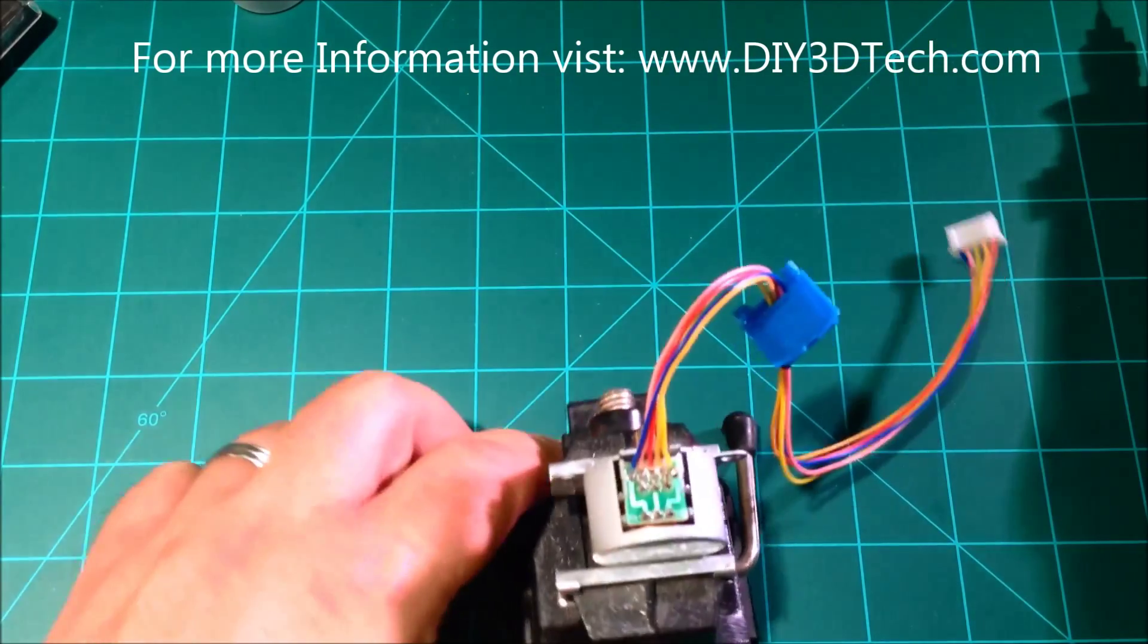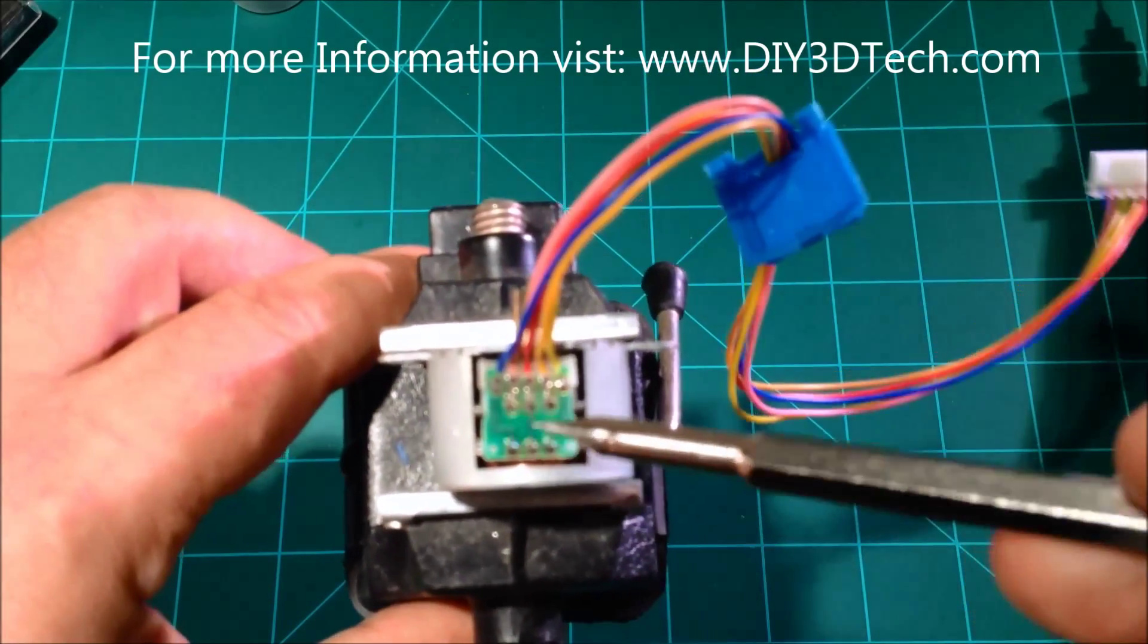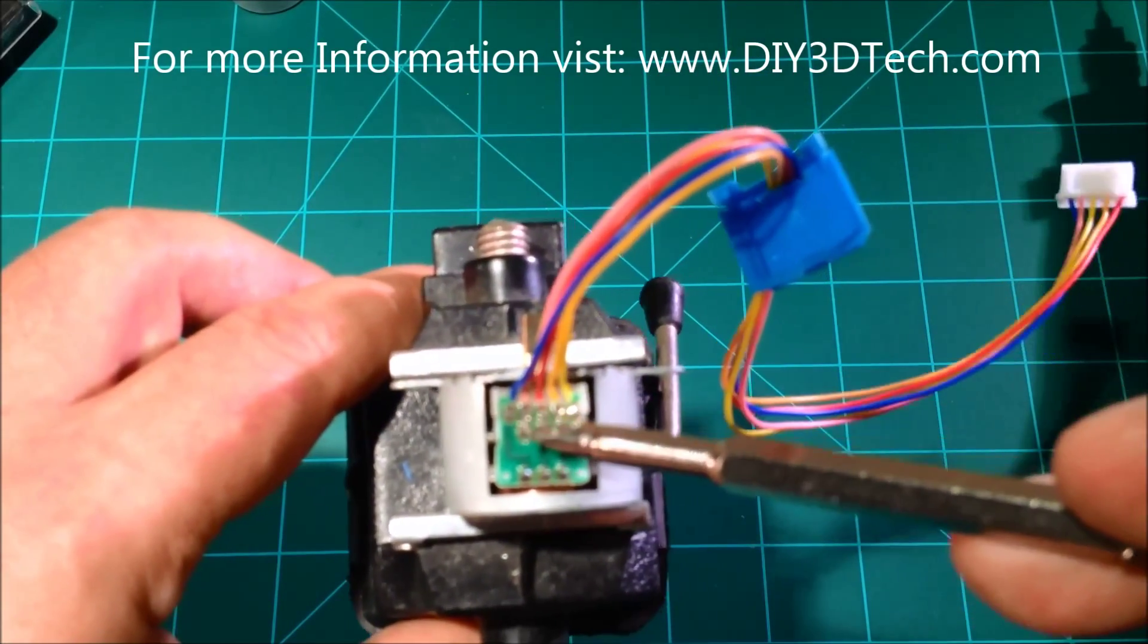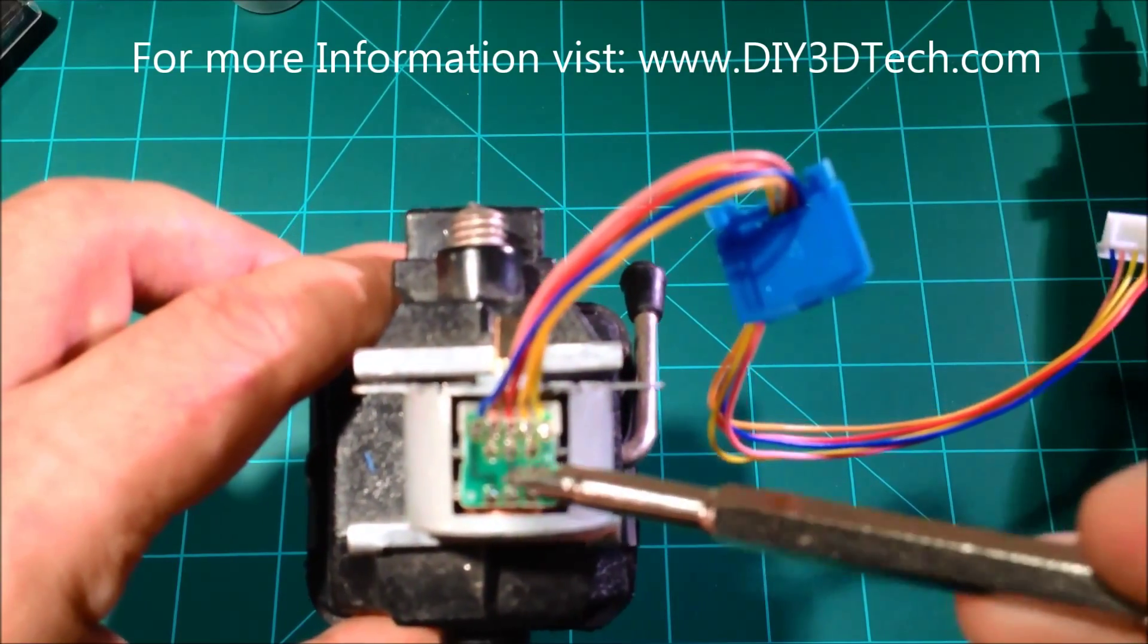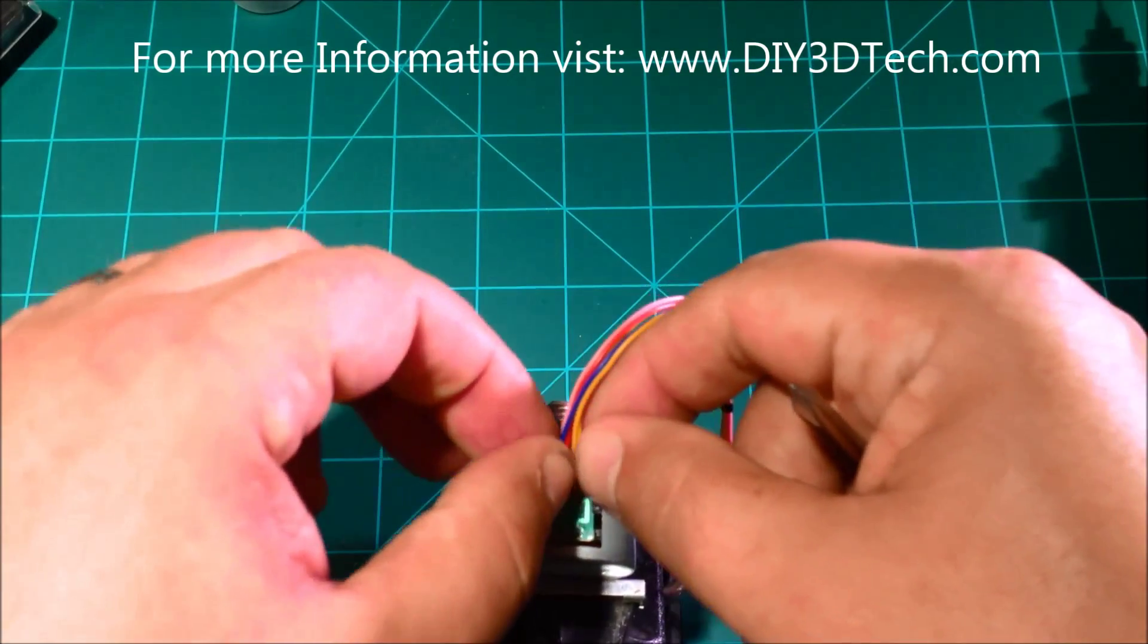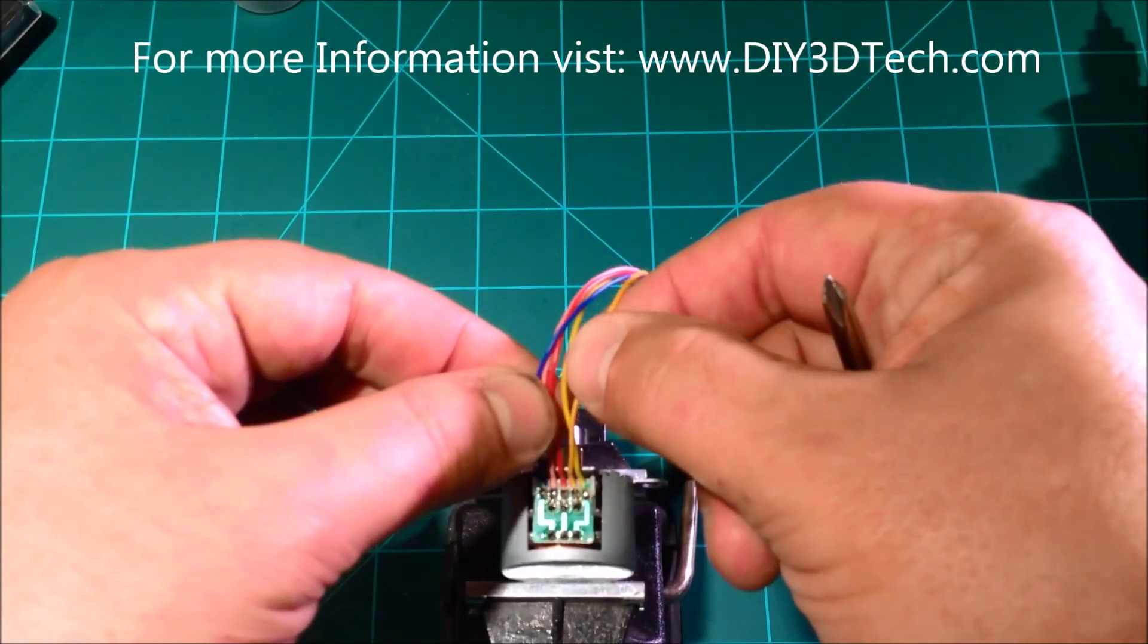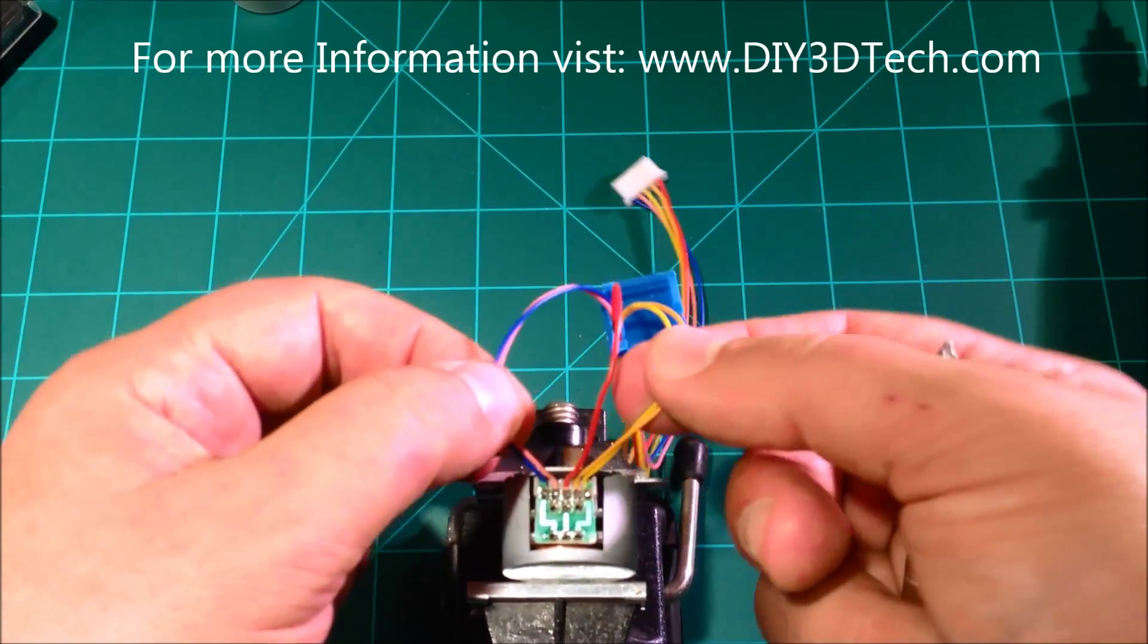Now there's a couple different ways that we can make this modification, because the modification is going to be to the center trace here, this red wire. We need to cut this trace.